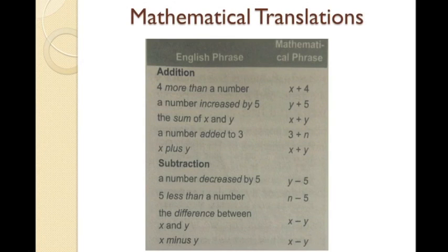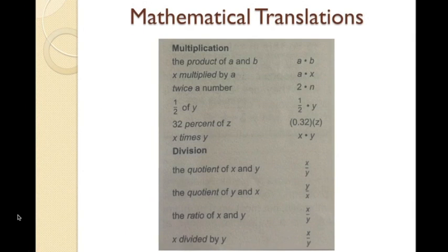The tables provided show common word phrases translated into mathematical phrases. We can choose a variety of letters to represent the unknown. The word 'is' or some form of the verb 'to be' is often used to indicate equality.